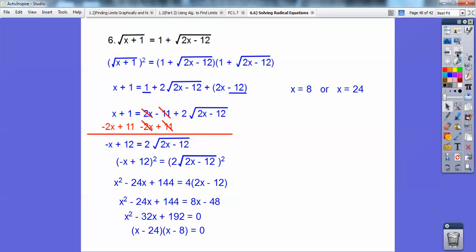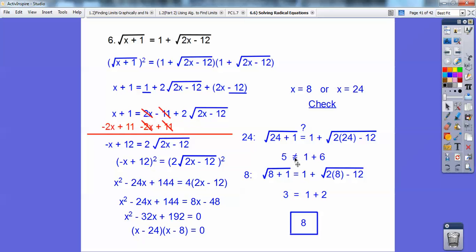So now I'm going to check those, you guys, so here they are checked out right here, and I checked 24. 24 didn't check out, only 8 checked out. 24 is called an extraneous solution. Only 8 checks out. You don't need to worry about the name extraneous, at least for now you don't. So the answer is only 8 on that one.